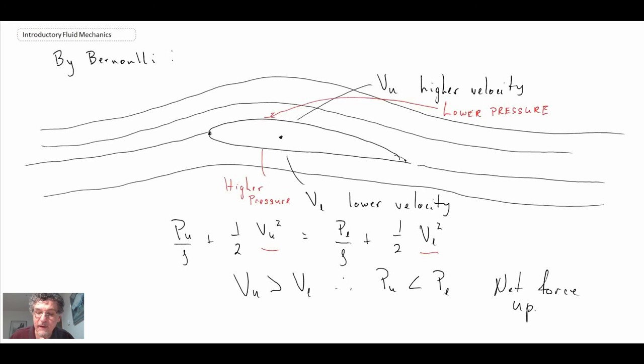So P upper is lower than P lower. And then we get net force up. And that results in the lift. And that's what we saw in the lift curve. So the lift coefficient plotted as a function of alpha. So that is lift. We've looked at drag, external viscous flows. And that concludes the course. So I'd like to thank you for your attention. I hope you enjoyed it. I hope you learned something about fluid mechanics and introductory course.